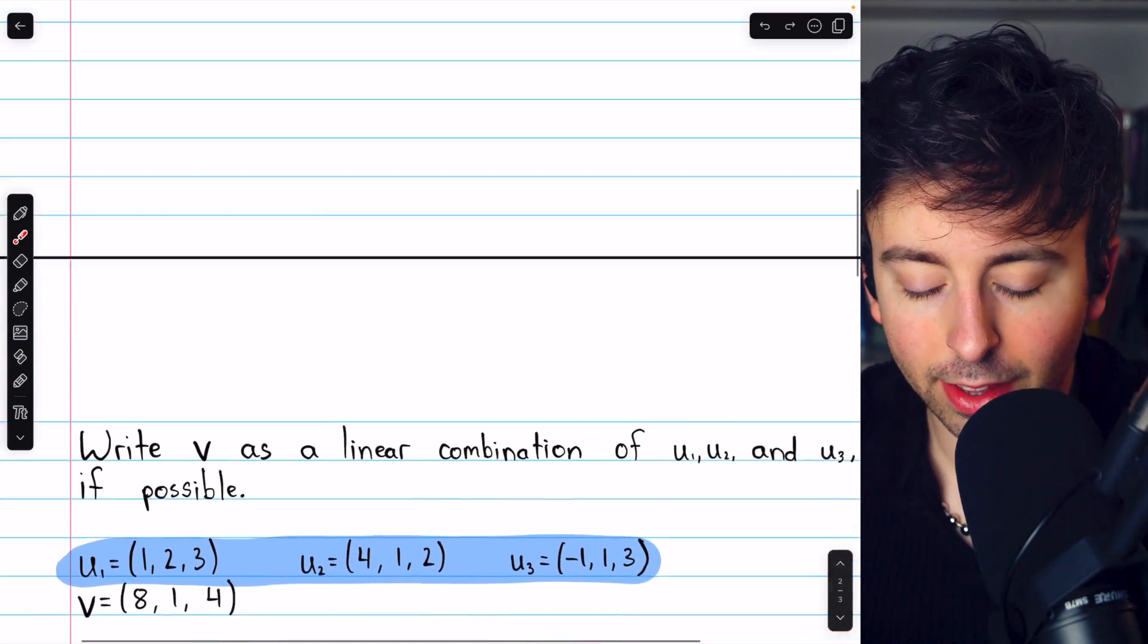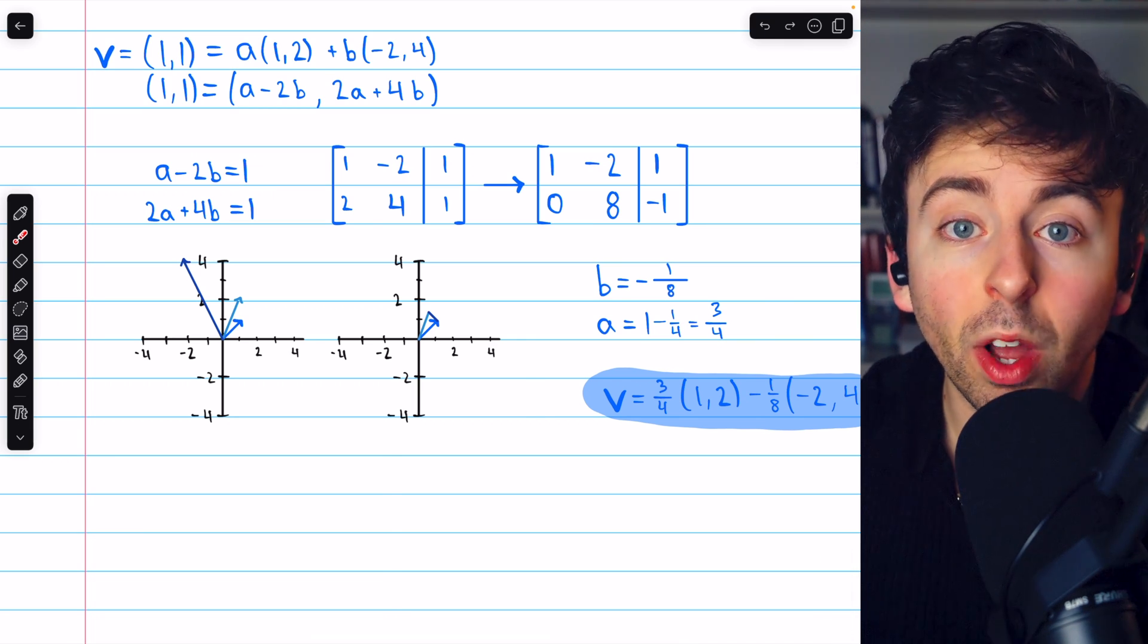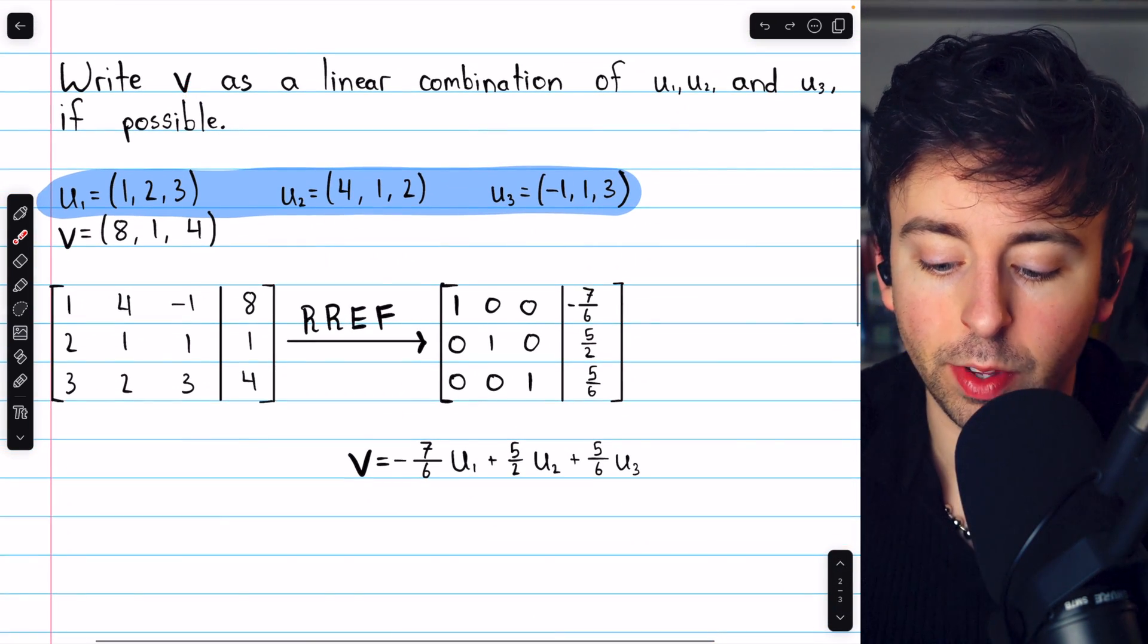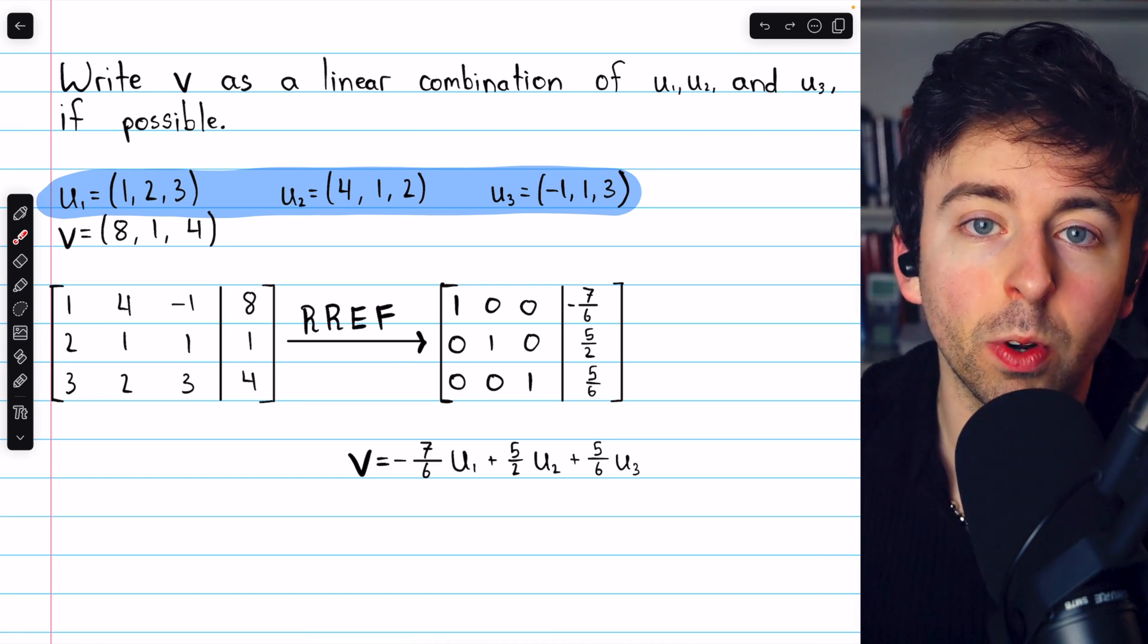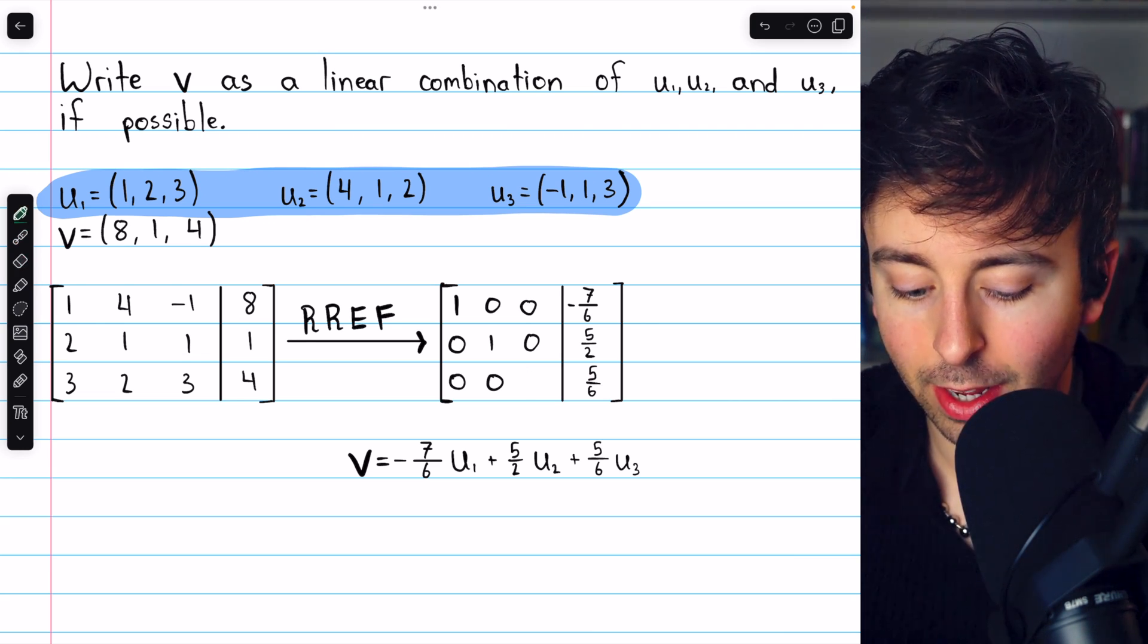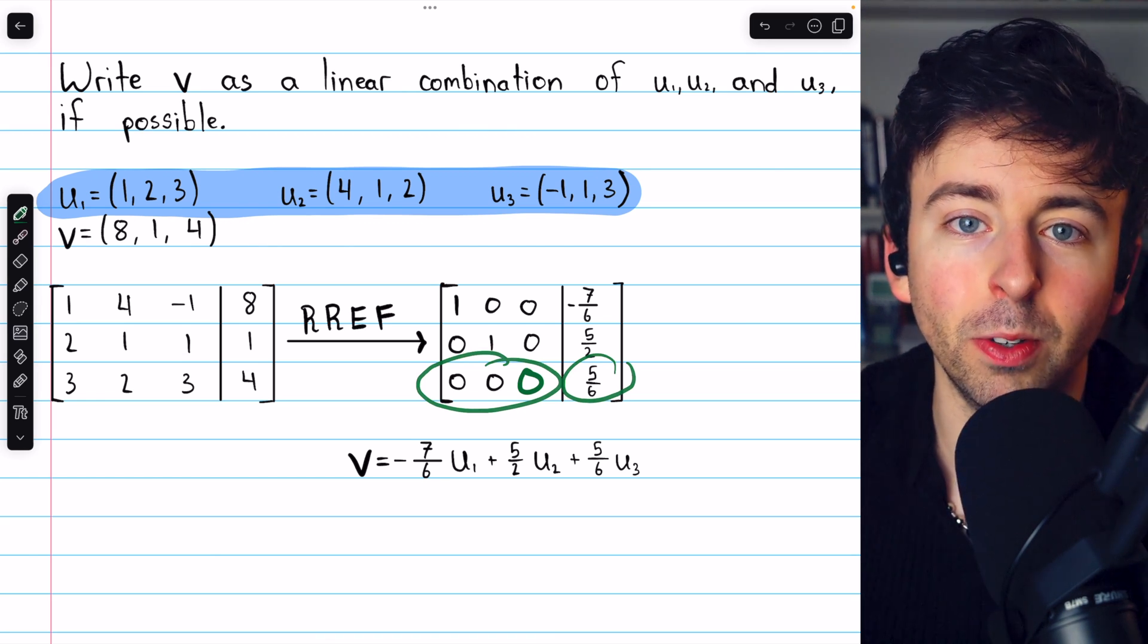If the system of equations underlying this process, this system in the first example, if that wasn't consistent, and so it's not possible to write the vector v as a linear combination of the given vectors, then performing Gauss-Jordan elimination would not produce a solution. We would end up with something like this, suggesting that zero must equal 5/6. Clearly, no solution.